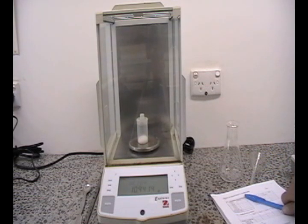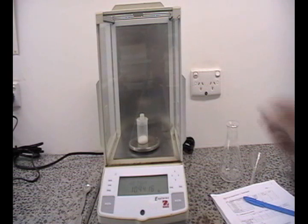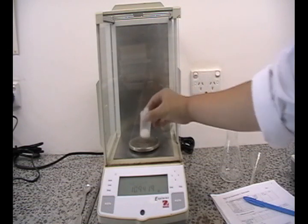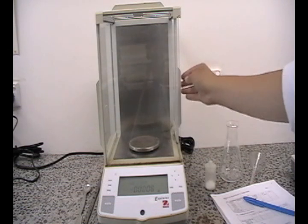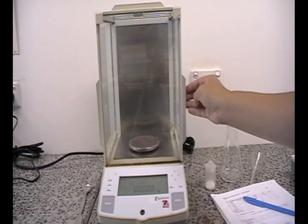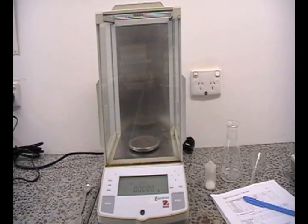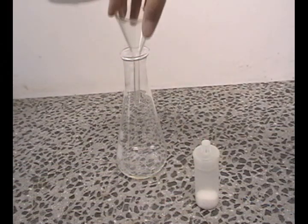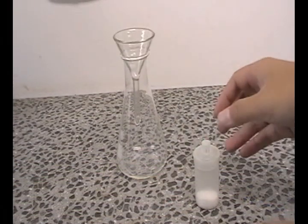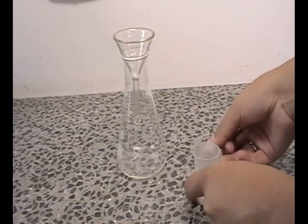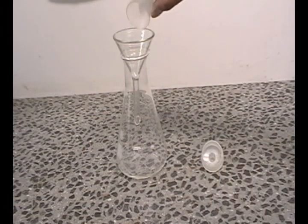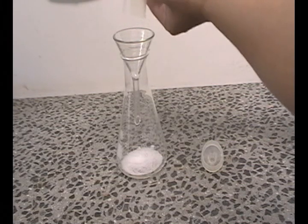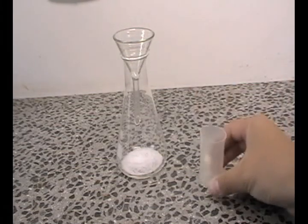When you are done, take the substance out of the balance. Remember to close your side door. Now let's transfer the substance into a conical flask. Transfer the substance into a conical flask via a funnel. Tap the weigh bottle to ensure that you are transferring the maximum amount of substance.